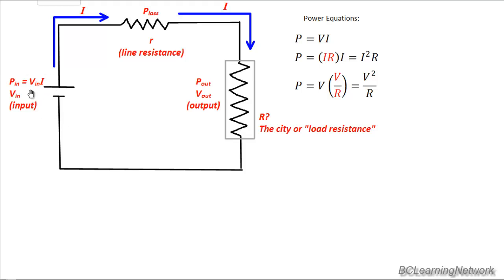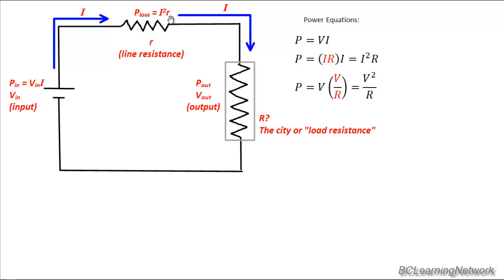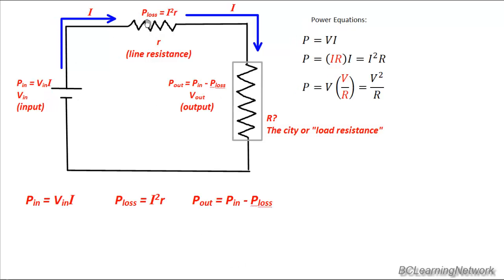The only equation left without voltage is I squared R. We know the current — we can figure it out from our input data — and the line resistance is given as little r. So I squared R is a great formula to use for power loss, and it's probably the only one you'll ever use to find power lost in a line. For output power, using common sense: if we start with a certain input power and lose some through the lines, whatever's left is the output power. So P out equals P in minus P loss. Input power is V in times I, loss is I squared R, and output power is input power minus loss.